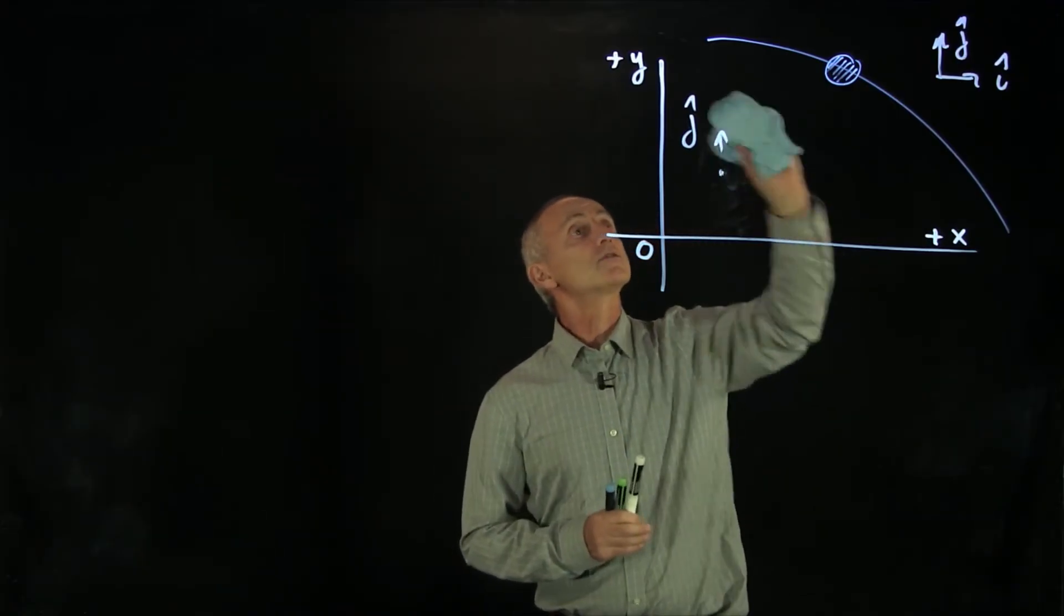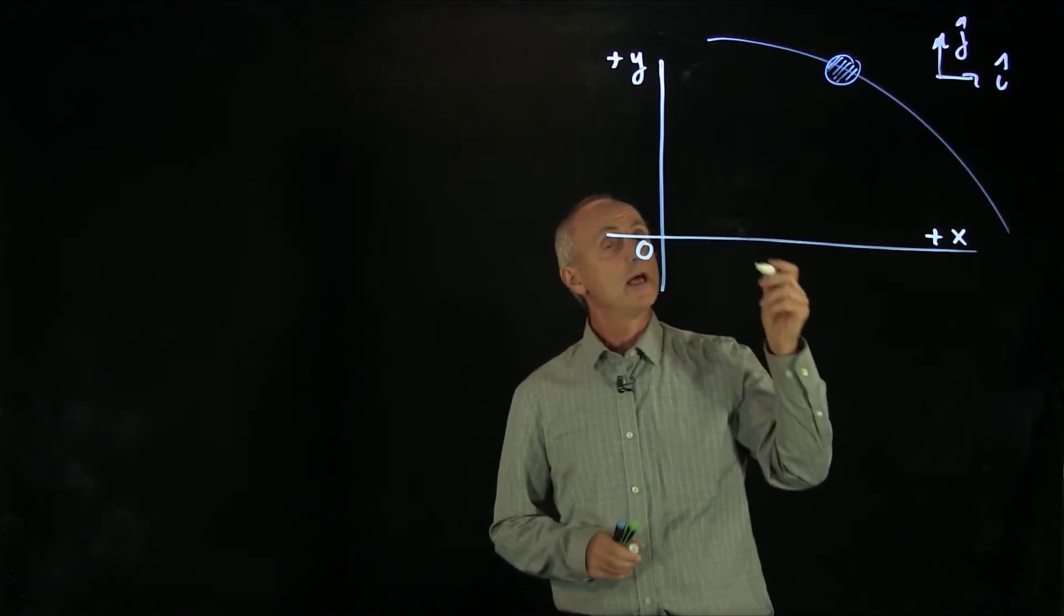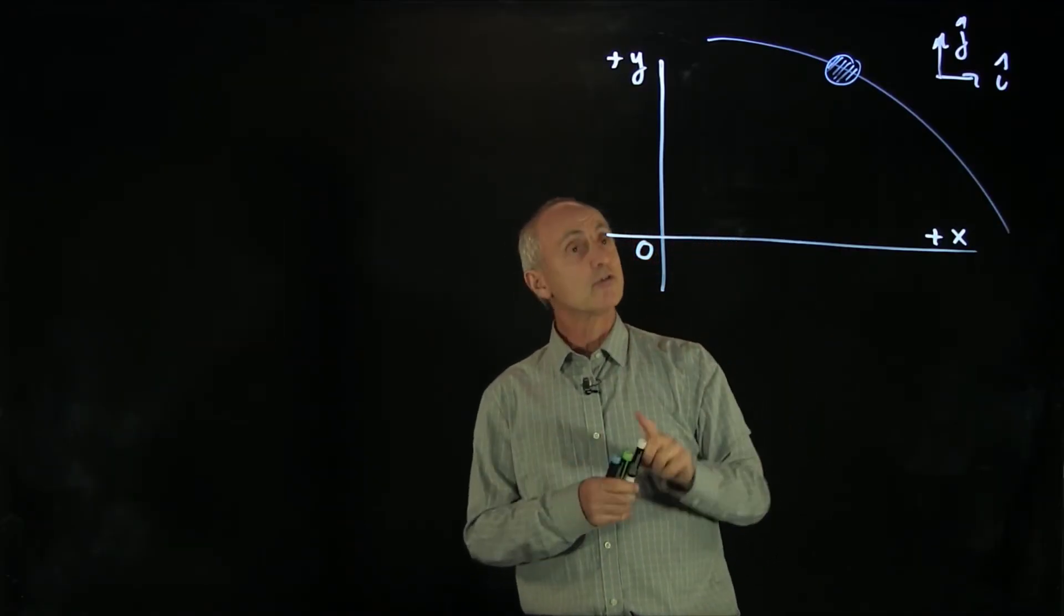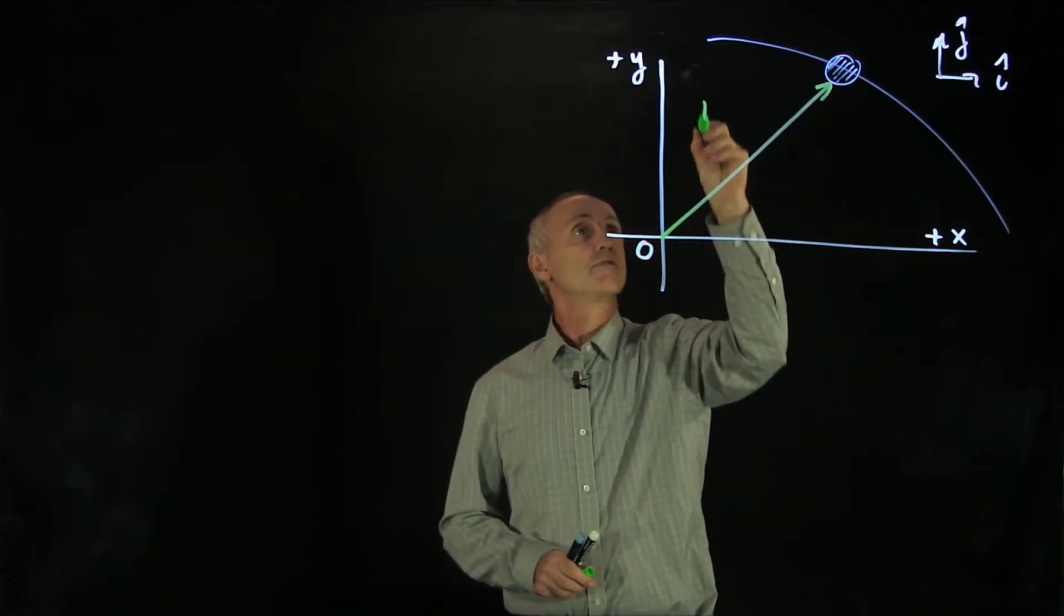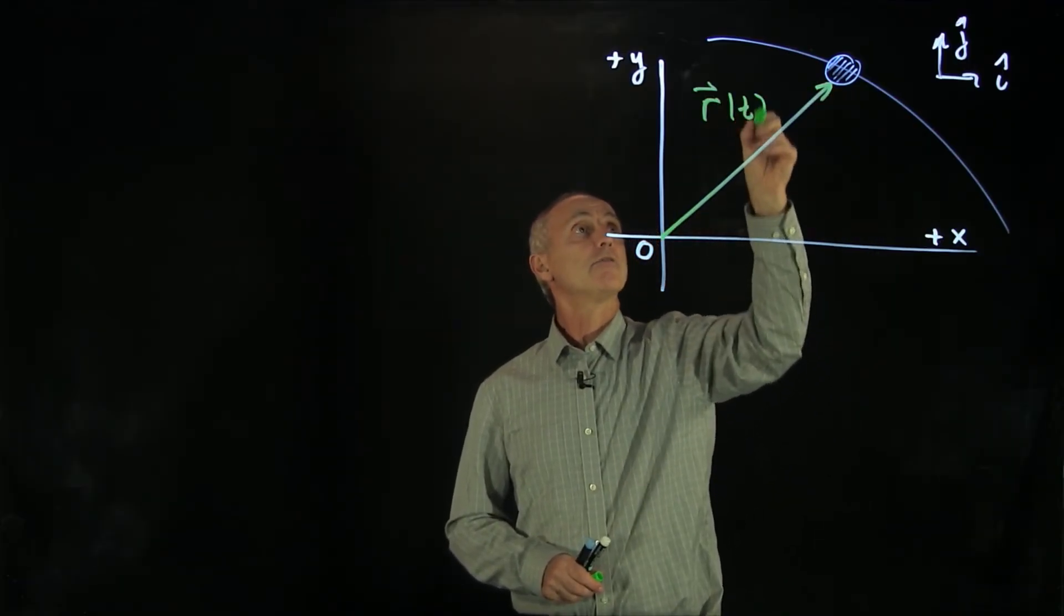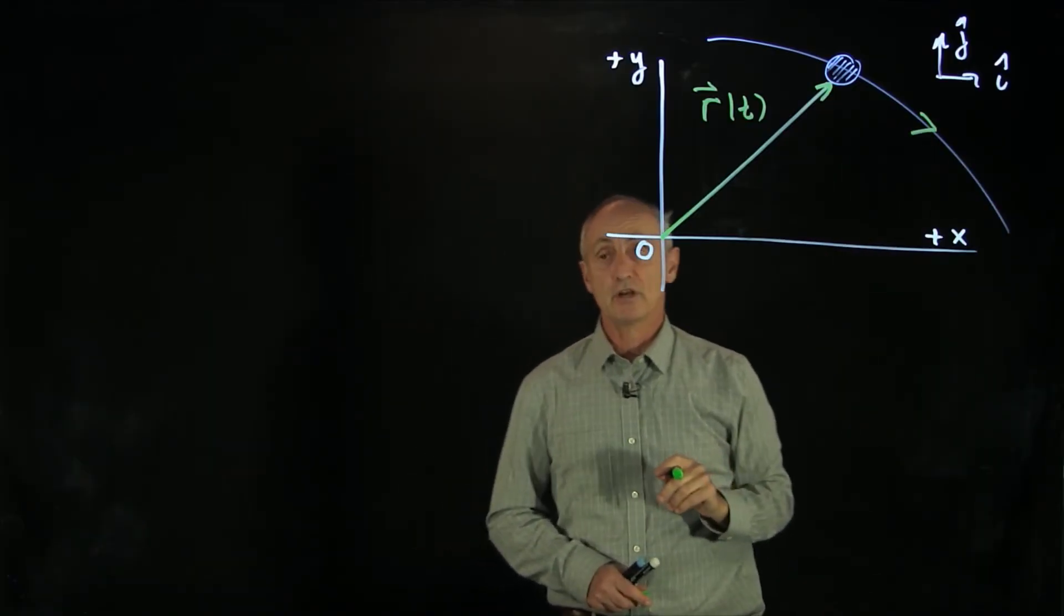So in our Cartesian coordinates, we now want to define the position vector. The position vector is a vector from the origin to where the object is. We'll denote it by r of t, because as this object moves along its trajectory, that position vector is changing.